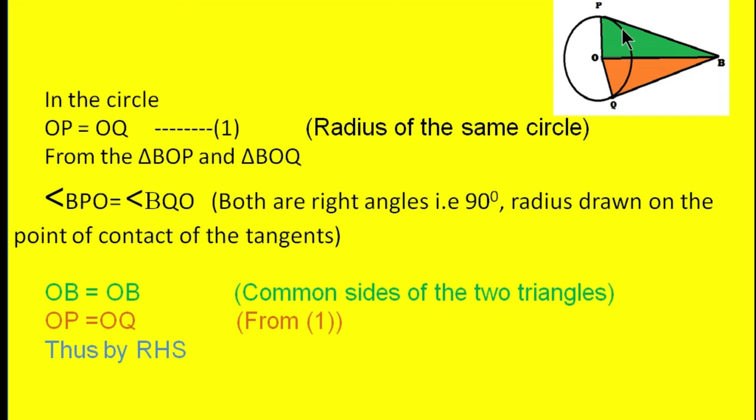This is right angle, then opposite to the right angle is hypotenuse, and there is one side OP. So by RHS these two triangles are congruent.